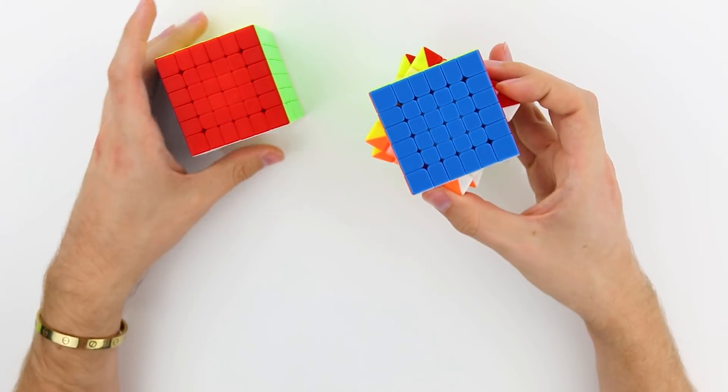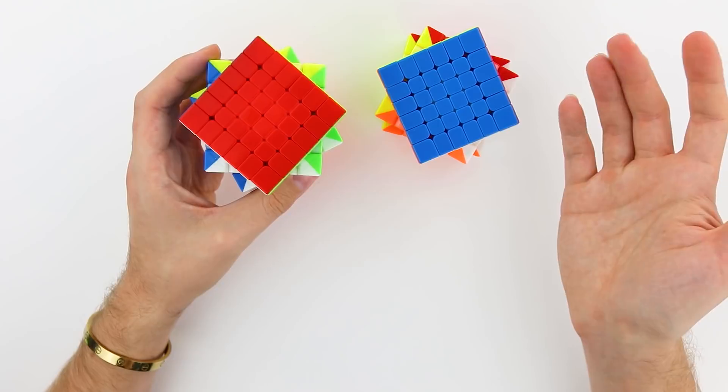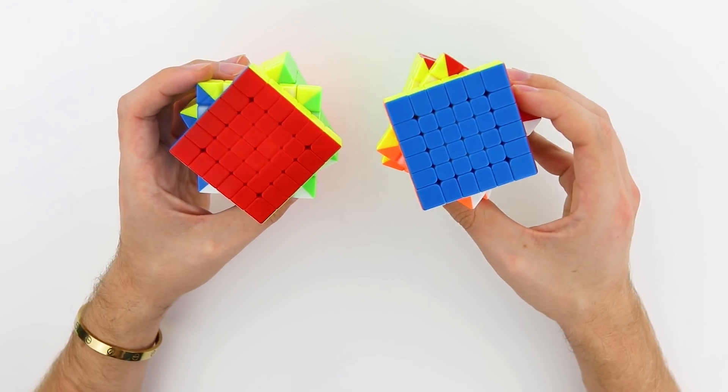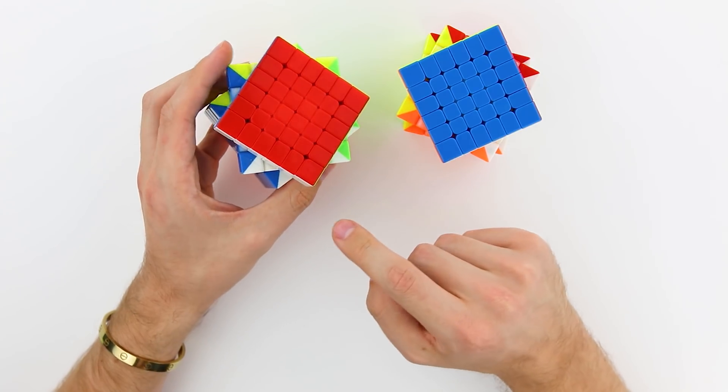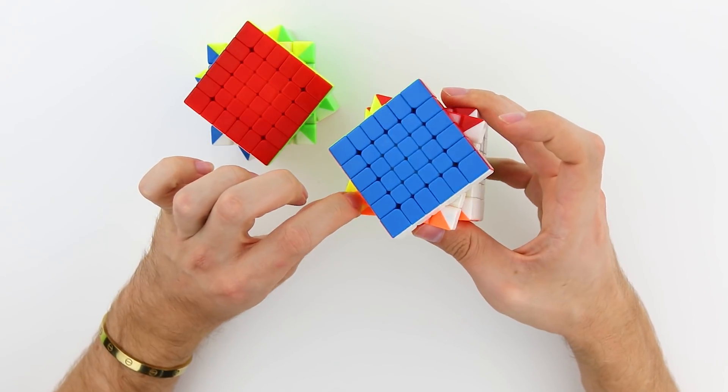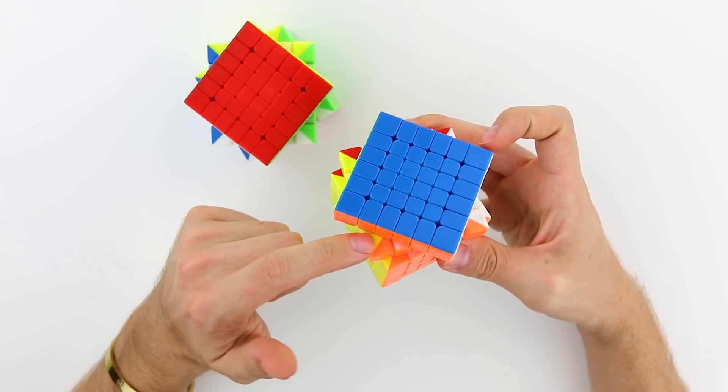And other than that, I think everything else, at face value, looks pretty much the same. We don't have these little lips anymore that the version 1 has on the second layer. It's now just completely a flat, smooth surface.